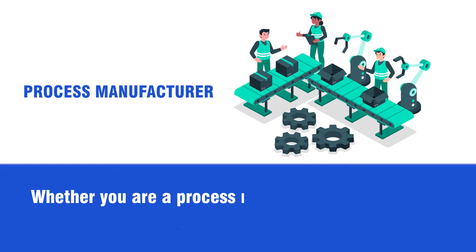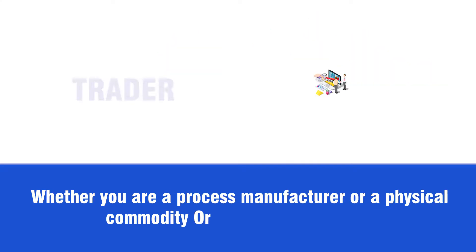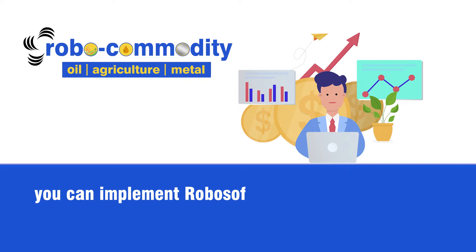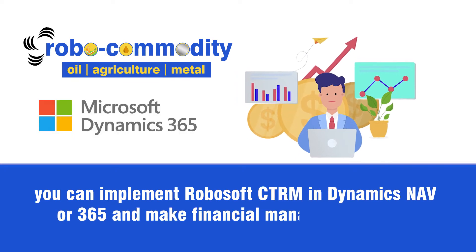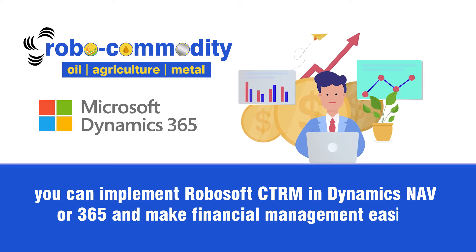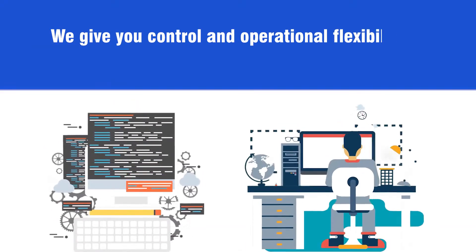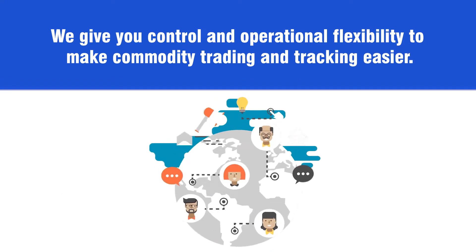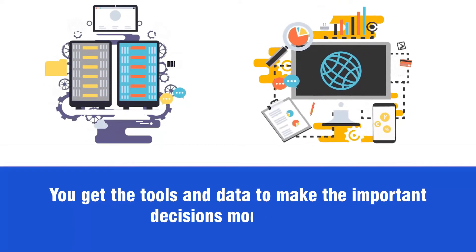Whether you are a process manufacturer or a physical commodity or back-to-back trader, you can implement RoboSoft CTRM in Dynamics NAV or 365 to make financial management easier. We give you control and operational flexibility to make commodity trading and tracking easier. You get the tools and data to make the important decisions much quicker.